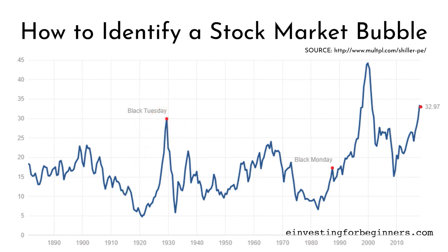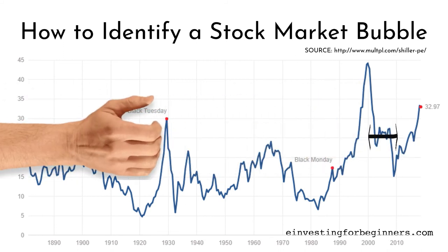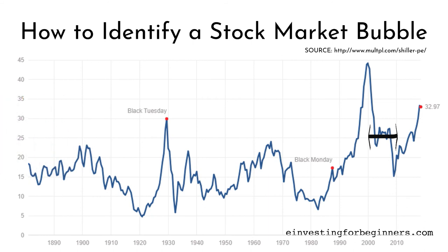The same thing happened with the dot-com bubble. In the 1990s, the later you went toward the late 90s, the steeper the increase — from 25, 30, 35, 40, almost to a peak of 45. And looking at 2008, the housing bubble and the accompanying stock market bubble saw a Shiller PE above 25 for several years. That might not seem terribly high, but the mean Shiller PE historically since the late 1800s has been 16.85.